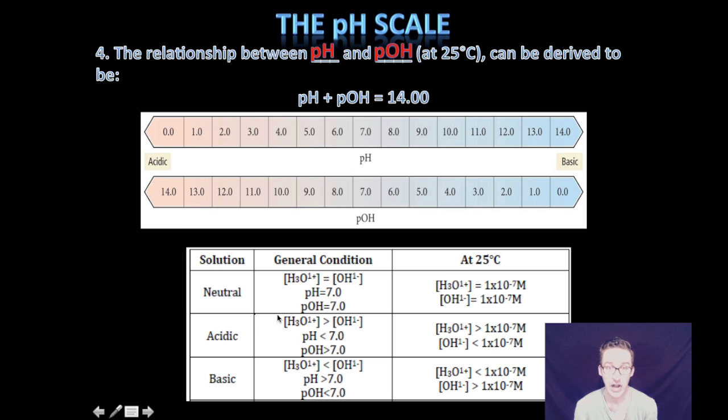In acidic conditions, hydronium ion concentrations will be greater than hydroxide ion concentrations. pH will be less than seven. pOH will be greater than seven. And then lastly, as you look at your basic solution, there'll be greater hydroxide ion concentration. pH will be greater than seven. pOH will be less than seven.